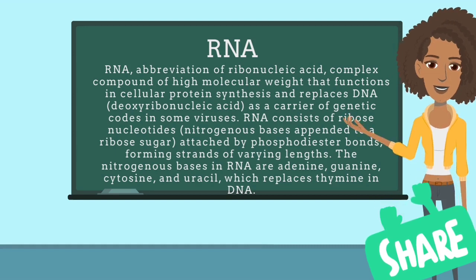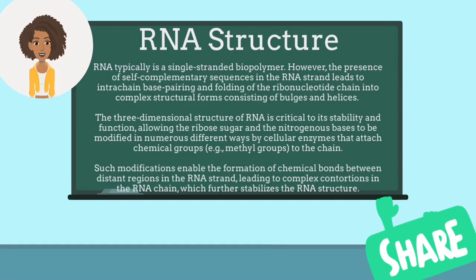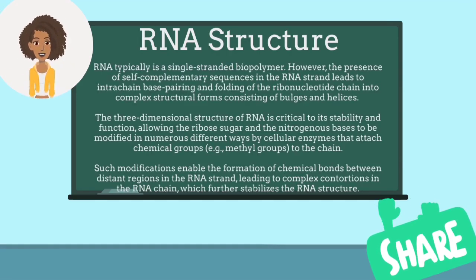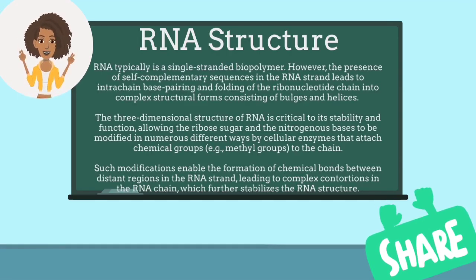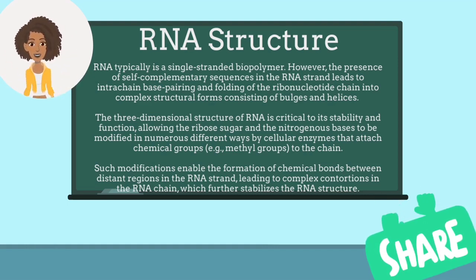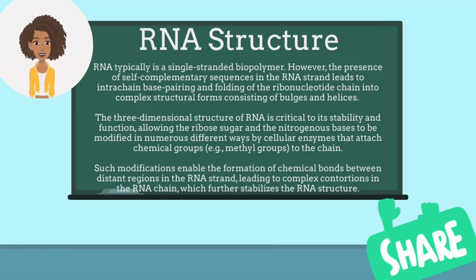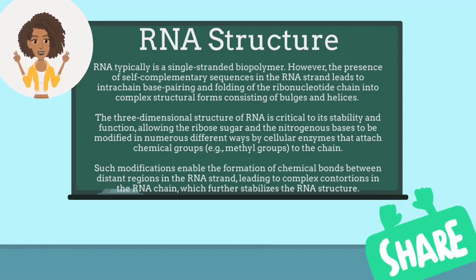The nitrogenous bases in RNA are adenine, guanine, and cytosine. RNA typically is a single-stranded biopolymer. However, the presence of self-complementary sequences in the RNA strand leads to intra-chain base pairing and folding of the ribonucleotide chain into complex structural forms consisting of bulges and helices.